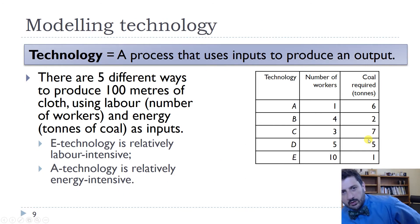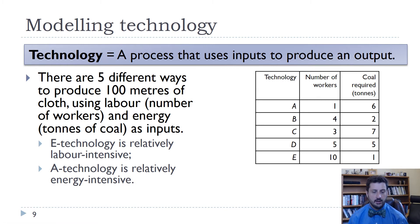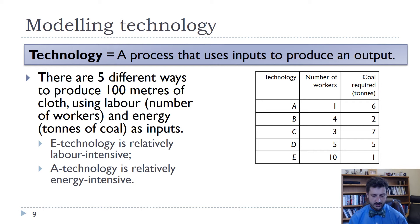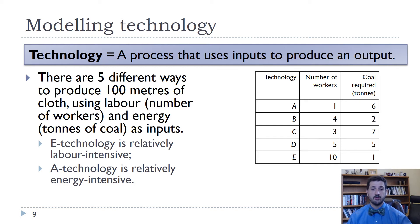The way we're going to model this technology is to think about two inputs — workers and coal — and how those are combined into an output. In this case, our output is 100 meters of cloth. It's interesting that the Industrial Revolution really started in textiles, because making cloth was one of the more time-intensive processes people worked on at the time, taking many hours just to produce cloth.